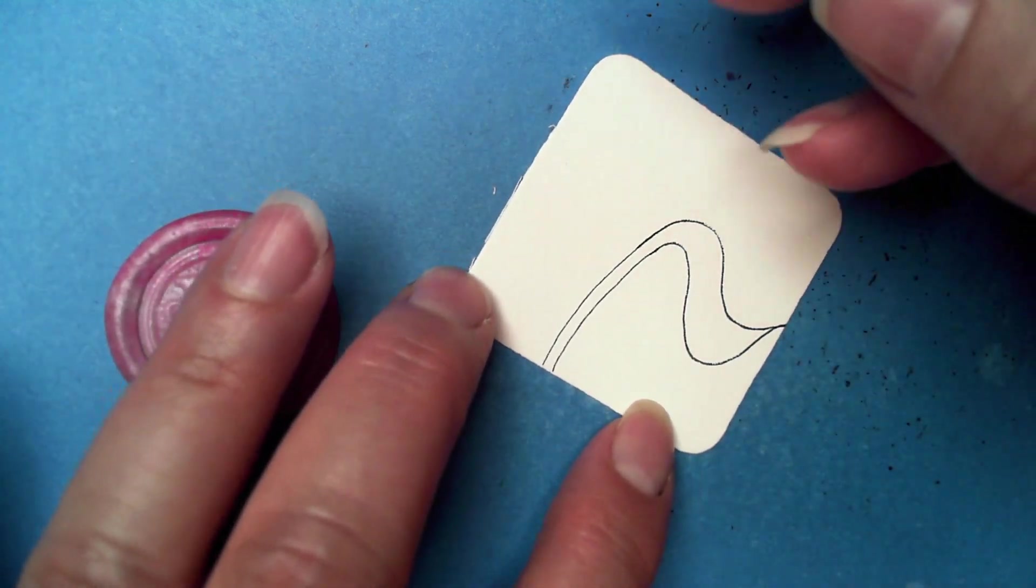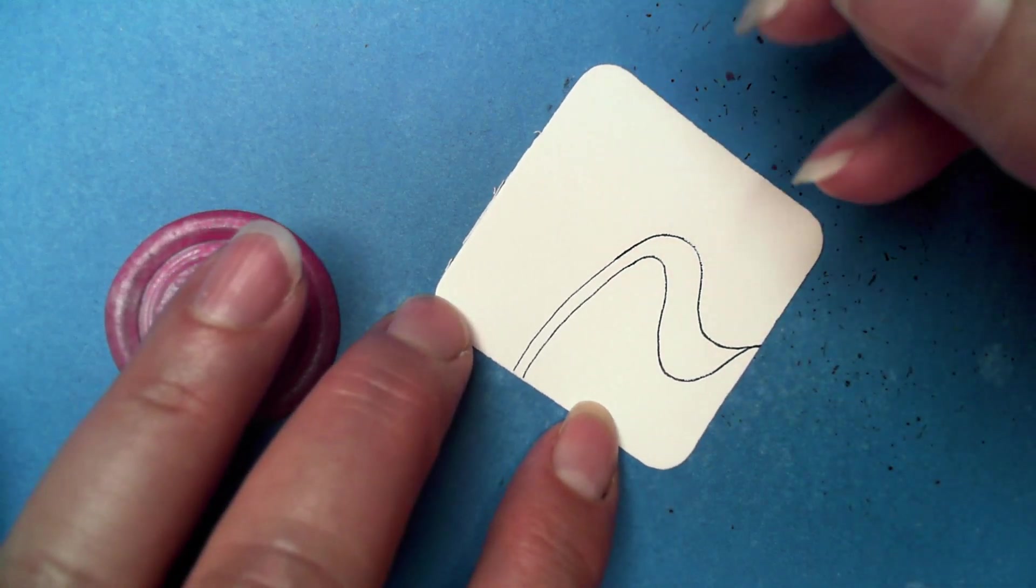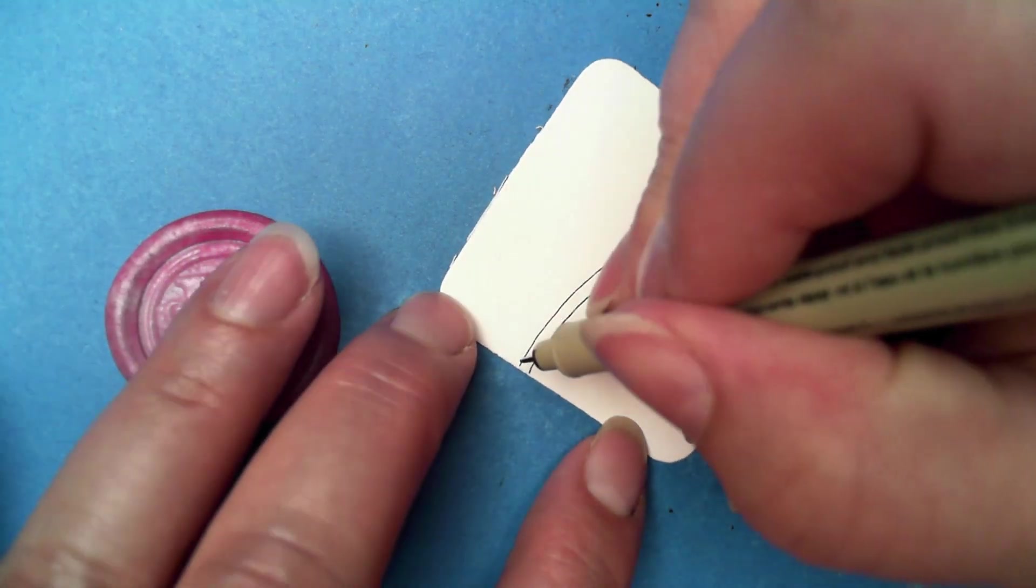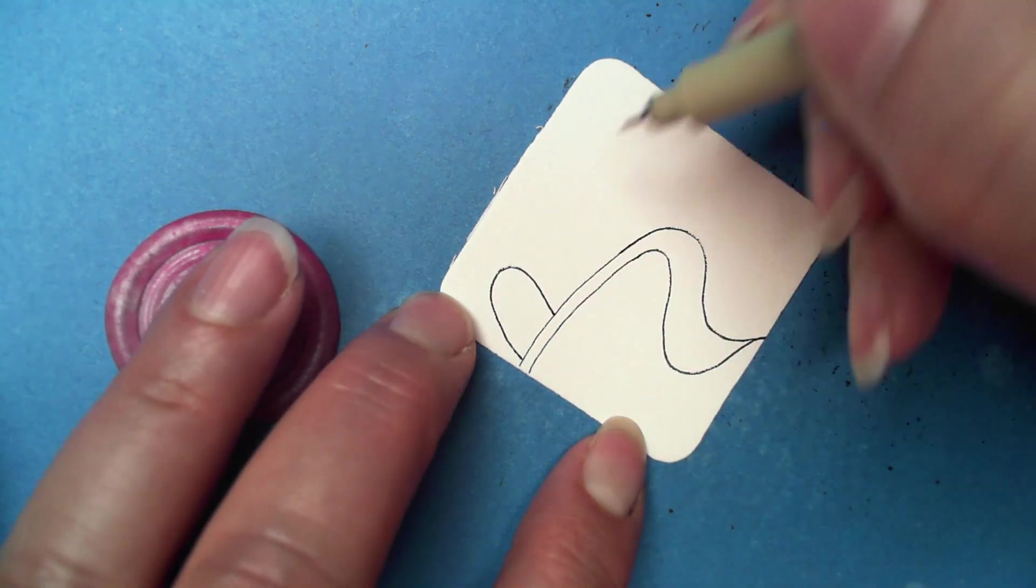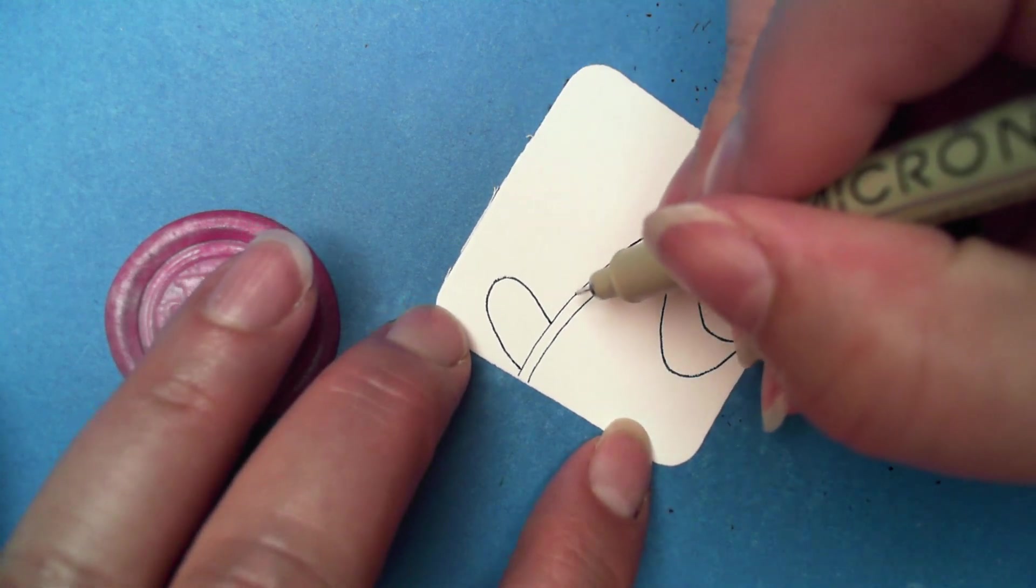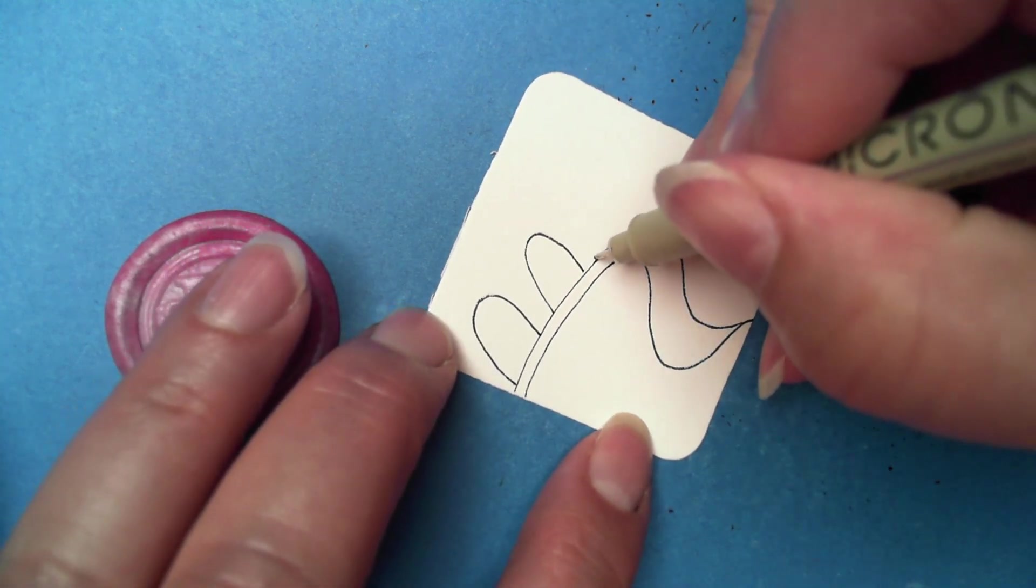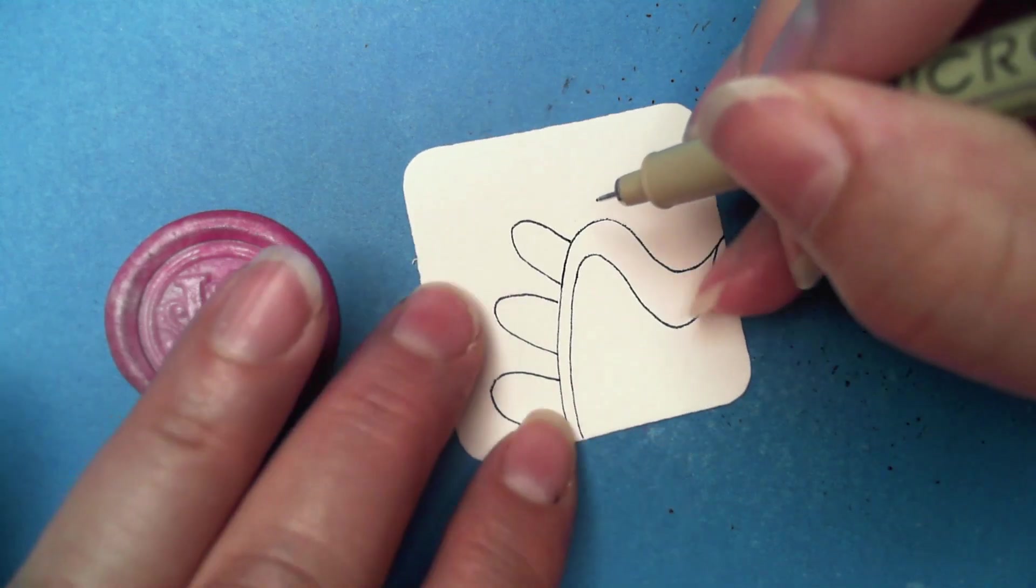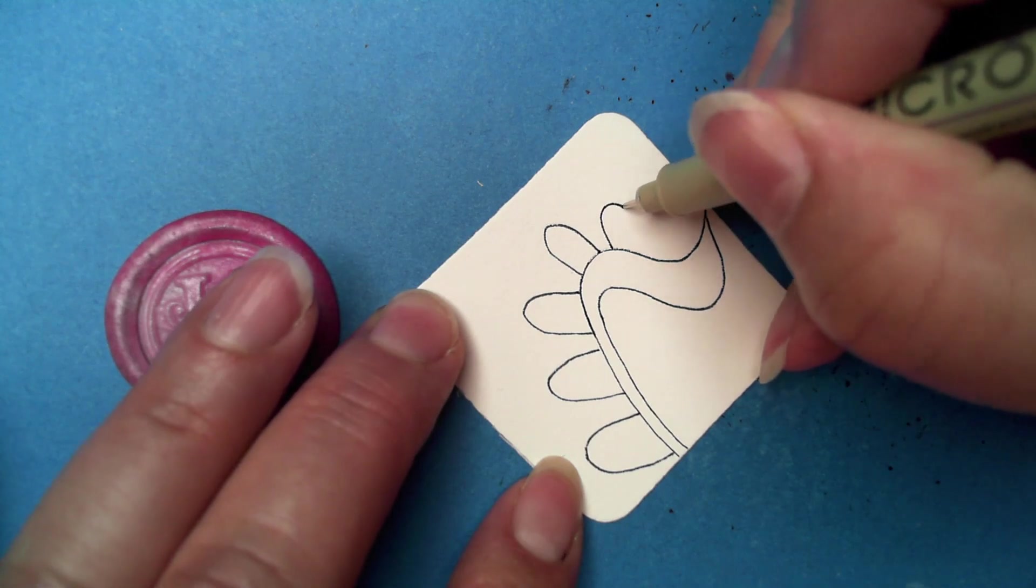This stroke is similar to Califlora - these big C-shaped curve lines, real tall like a U, almost, or this would be an upside-down U. We're going to come on this side. I'm making them particularly large for some reason. We're going to just do it all the way around.